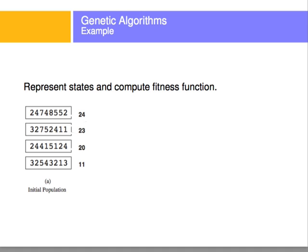Now here's the algorithm. First we represent states and compute their fitness functions. For example, this state has a fitness function of 23, another state has a fitness function of 24, another 20, and another 11. So we compute the fitness function for each individual in the population.